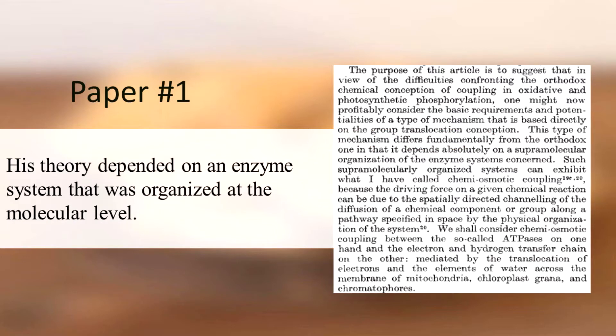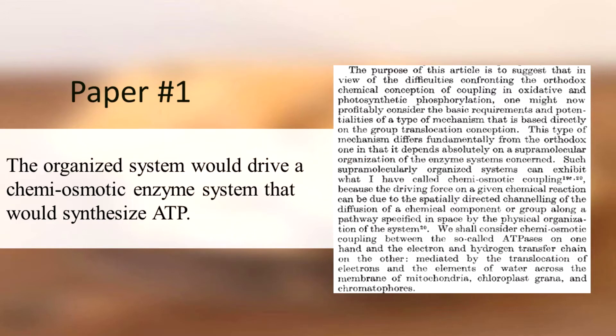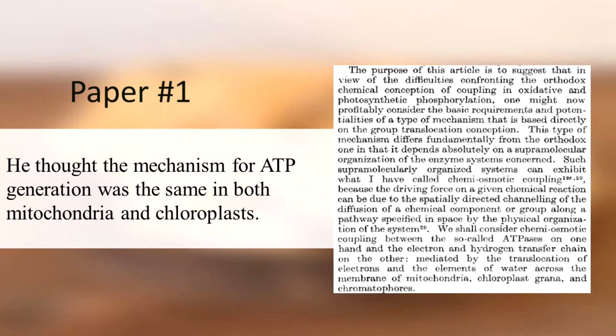His theory depended on an enzyme system that was organized at the molecular level. And this organized system would drive a chemiosmotic enzyme system that could synthesize ATP. Note that he thought the mechanism for ATP generation was the same in both chloroplasts and in mitochondria.